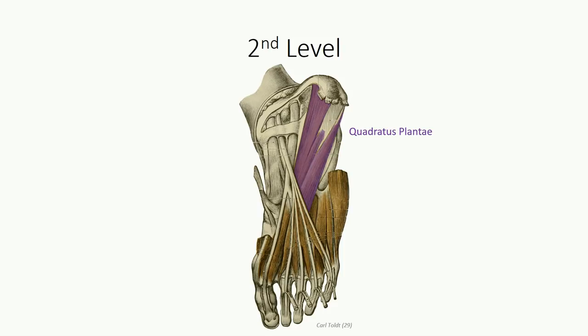Paralysis of quadratus plantae is one of the causes of pigeon-toed gait. Next, we have our lumbricals, very similar to what we saw in the hand, originating off the tendons of flexor digitorum longus and inserting on the extensor hood of the dorsum of the digits. As with the hand, contraction leads to flexion of the metatarsophalangeal joint and extension of the interphalangeal joints.